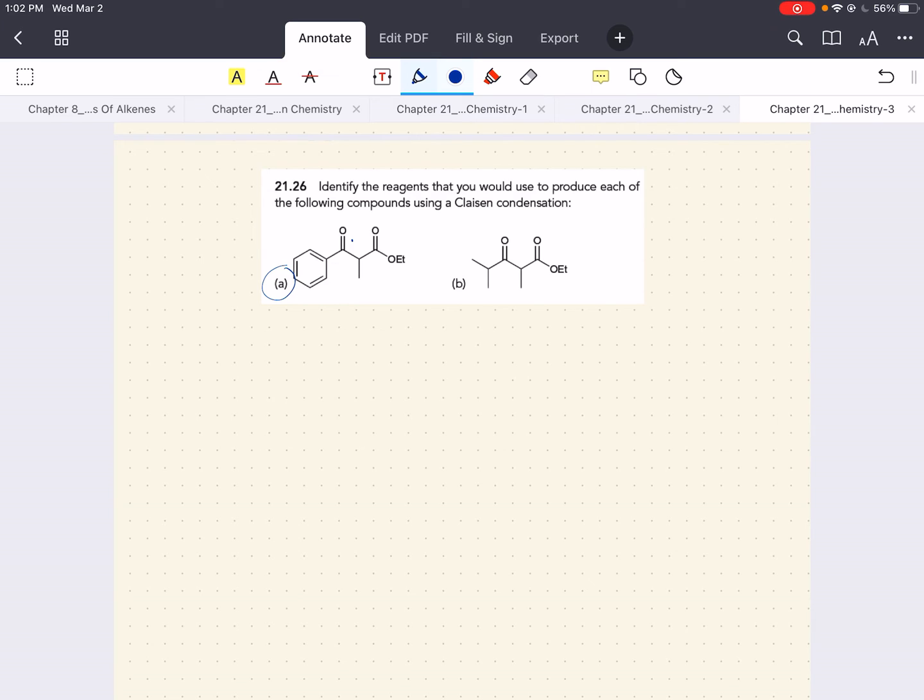We want to identify the reagents that you would use to produce each of the following compounds using Claisen condensation. So, looking at A, we're going to identify our alpha position and our beta position here. We're going to create a divide between them. The product that is at the alpha position that we've preserved here, this is going to be the product that's going to be deprotonated to form the enolate.